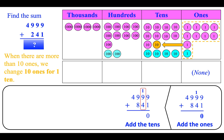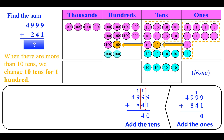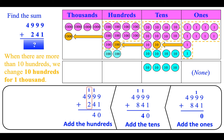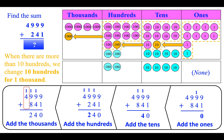Next we add the tens: one plus nine plus four is fourteen. When there are more than ten tens, we change ten tens for one hundred — we add one hundred to the hundreds place; now we are left with four. Next we add the hundreds: one plus nine plus two is twelve. When there are more than ten hundreds, we change ten hundreds for one thousand — we add one thousand to the thousands place; now we are left with two. Next we add the thousands: one plus four is five.